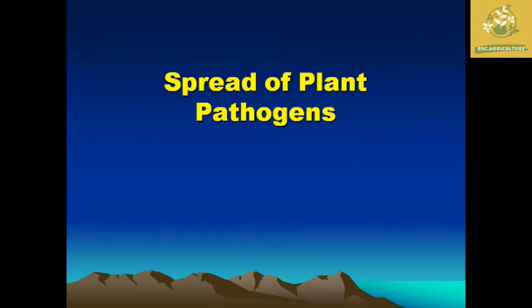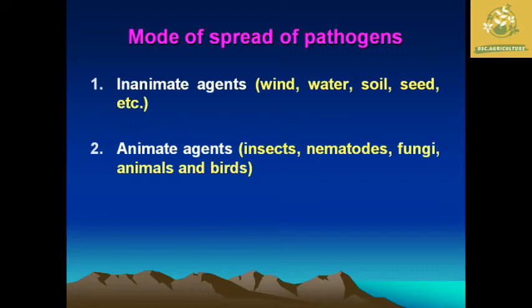After knowing about survival tactics, we must understand the spread of plant pathogens. The modes of spread are classified into two major types: inanimate agents and animate agents. Inanimate agents are natural agents that help microorganisms spread — examples include wind, water, soil, and seed. Animate agents are living agents that help spread pathogens, including insects, nematodes, fungi, animals, birds, and even humans.